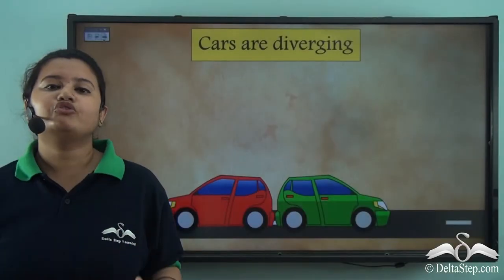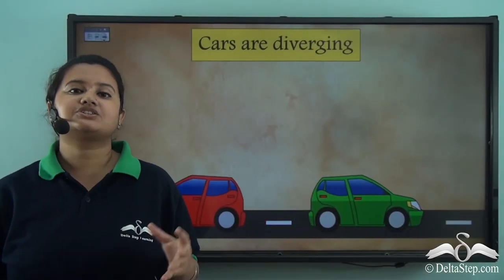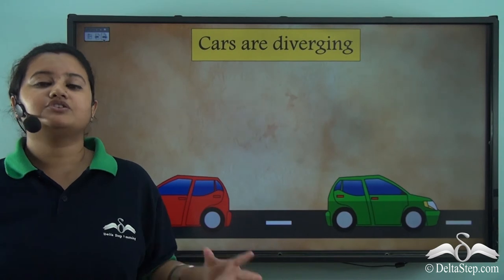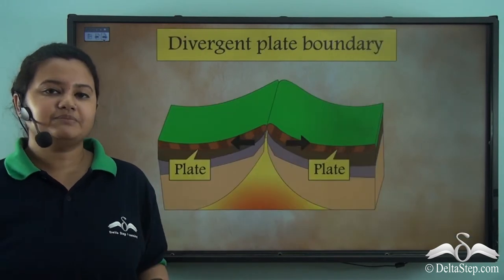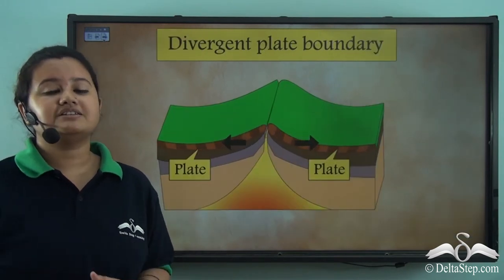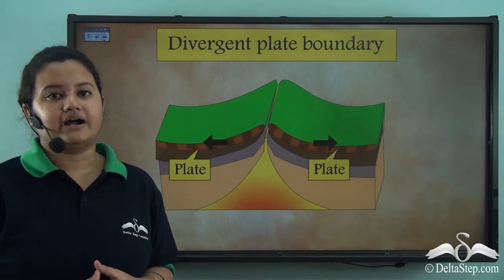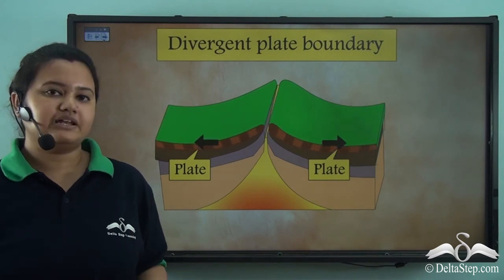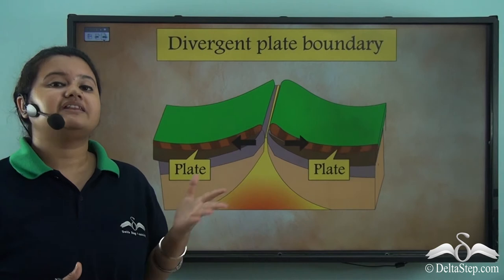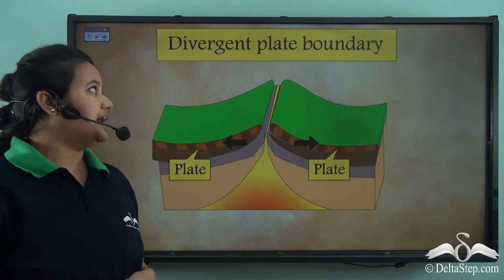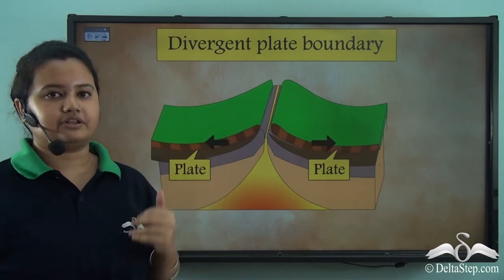The movement of tectonic plates is quite similar to the movement of cars on roads. Sometimes the cars diverge or move apart. Similarly, if two tectonic plates diverge, then it is known as a divergent plate boundary.